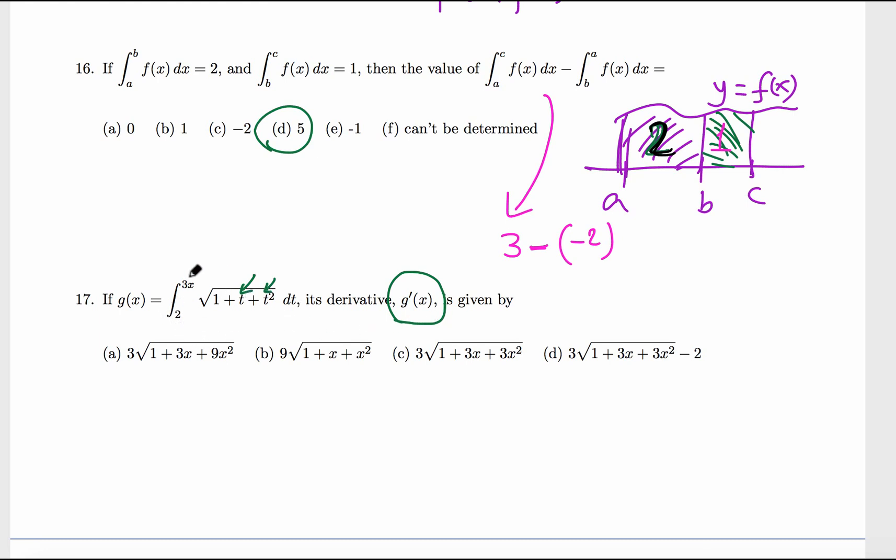Replace t by 3x, but then by chain rule, derivative of 3x is 3. So 3 times this t replaced by 3x. So there is a 3, so this could be the answer. Now we replace t by 3x: so 1 plus 3x plus (3x)². 3x quantity squared is 9x², not 3x². So this is the answer.